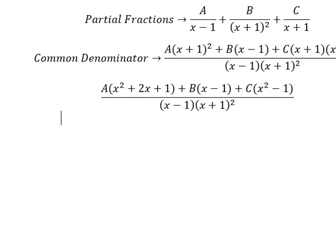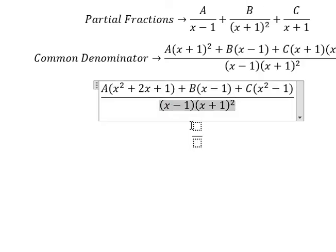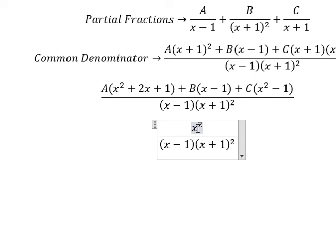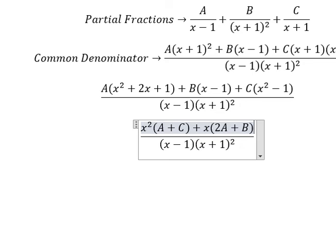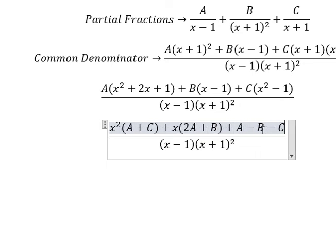Now we need to arrange based on the terms of x. For x², we have A plus C. For x, we have 2A plus B. For the constant, we have A minus B minus C, because A is multiplied by negative 1.